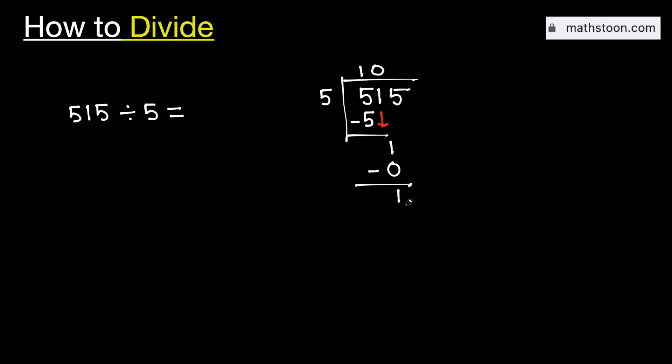But in this case, we will treat this 1 as less than 5. That is why we need to bring down this number 5 here. And we know that 5 times 3 is 15. Subtract, we get 0.